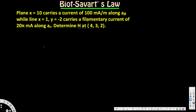Let's look at this problem. The question states: plane x=10 carries a current of 100 milliampere per meter along a_z, while line x=1, y=-2 carries a filamentary current of 25 milliampere along a_z. Determine H at point (4, 3, 2).